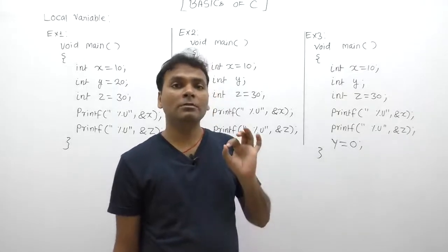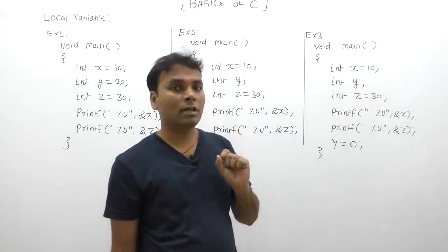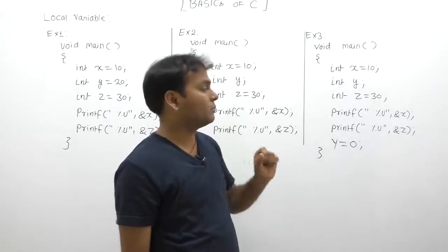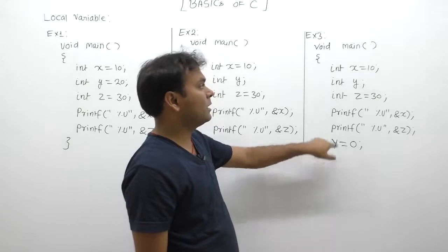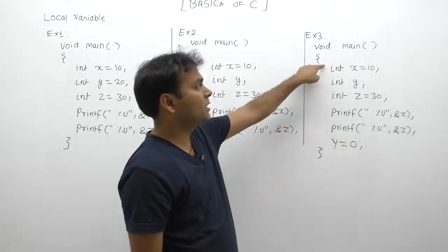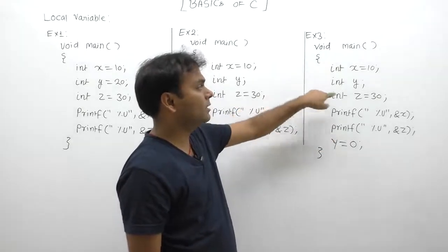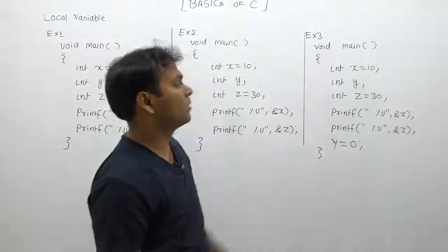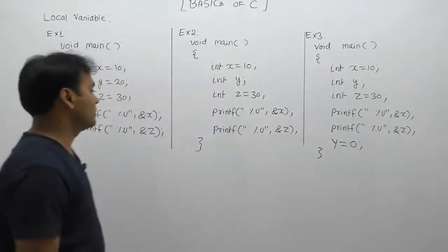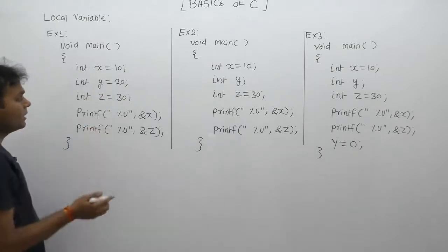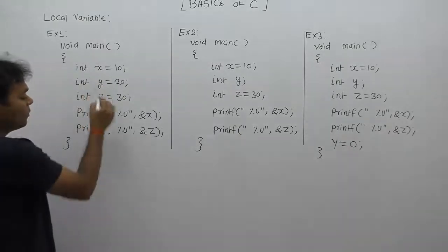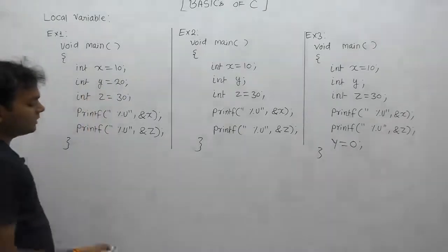In the third case, we are using variable z, and similarly y is accessed at the end of the program — storing some value like zero — which means that variable is considered used. According to the declaration order, let's see each program one by one. When the first program gets executed...